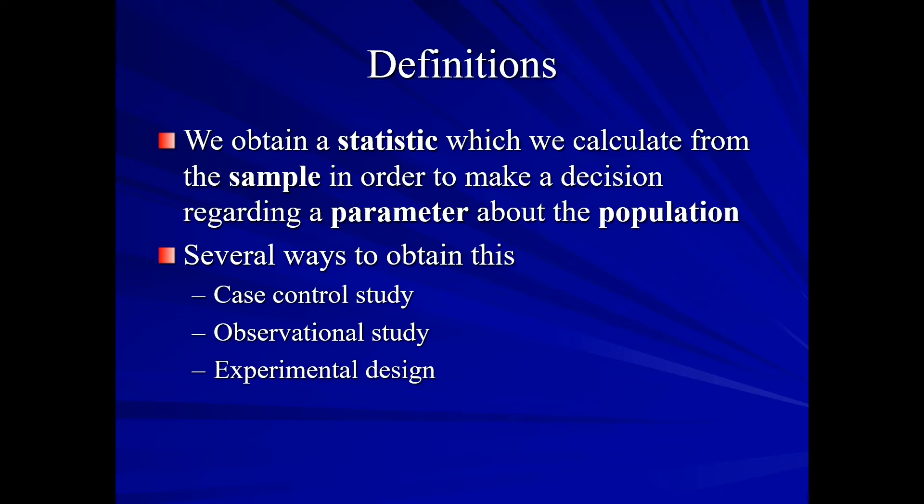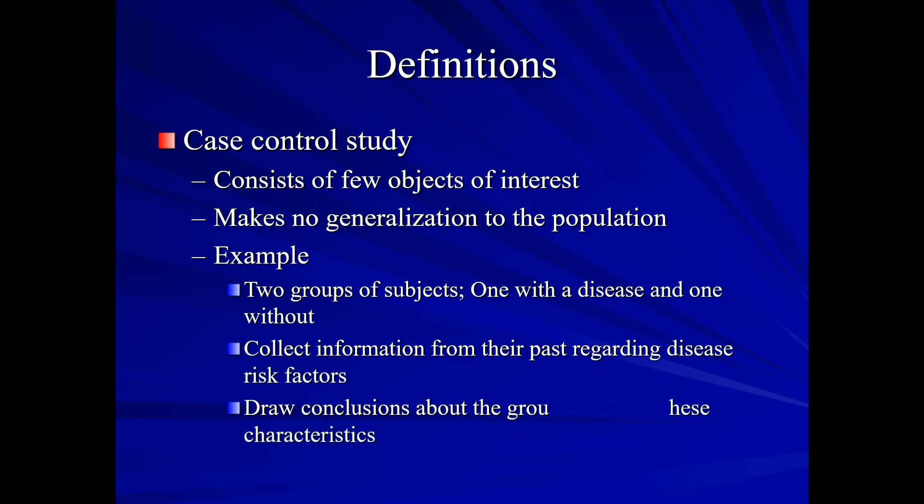One method is a case control study. A second method is an observational study. And then a third method would be an experimental design. Now, our case control study. This consists of few objects of interest and there is no generalization that can be made to the public. As an example, suppose I have two groups of subjects. One with a disease and one without. And I collect information from their past regarding disease risk factors. And I then draw conclusions about the group with these characteristics.